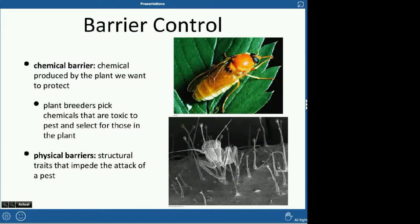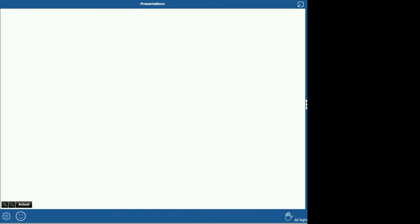You can also do barrier control. One type is chemical barriers — chemicals produced by the plant that are toxic specifically to the pest, so you're only killing the pest rather than beneficial organisms. Then there are physical barriers — structural things that impede pest attack. For example, a mosquito net is a physical barrier that protects people from the pest, which is the mosquito.